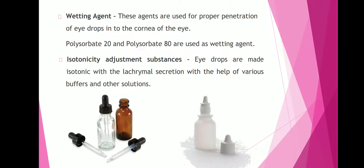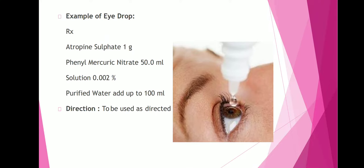Wetting agents are used for proper penetration of eye drops into the cornea of the eyes, e.g. polysorbate 20 and polysorbate 80. Isotonicity adjustment substances make eye drops isotonic with lacrimal secretions with the help of various buffers and other solutions. Example formula: atropine sulfate 1 g, phenyl mercuric nitrate solution 0.002% 50 ml, purified water up to 100 ml.